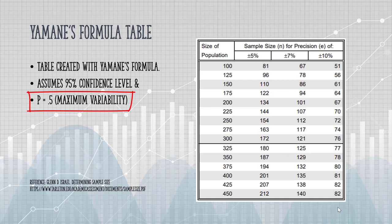A certain percentage of your population is going to have an attribute — for example, teachers that adopt the practice. If 50% have adopted the practice and 50% have not, then that is maximum variability. Setting the variability to 0.5 is extremely common, as it results in a more conservative sample size.